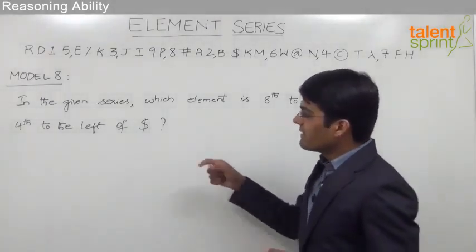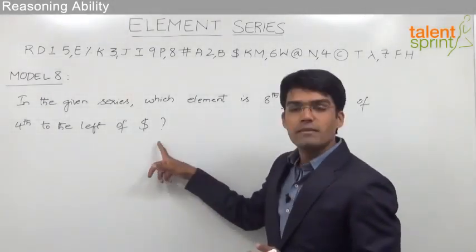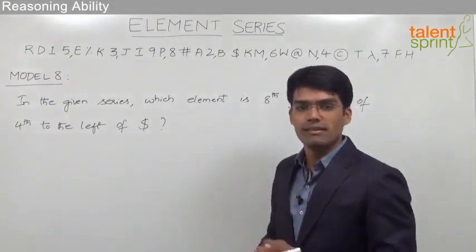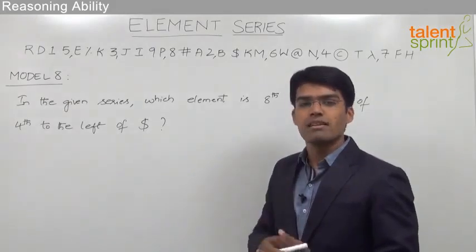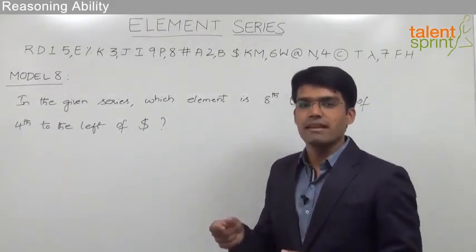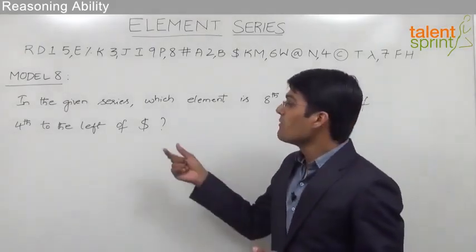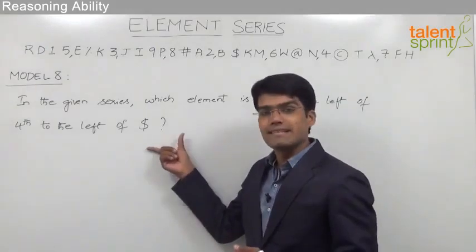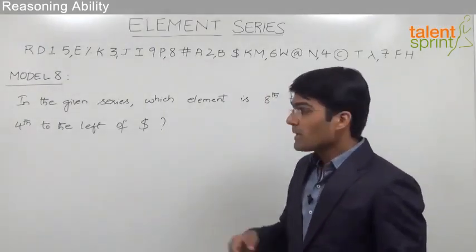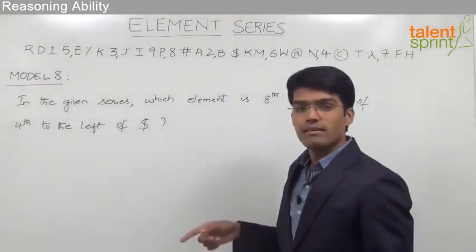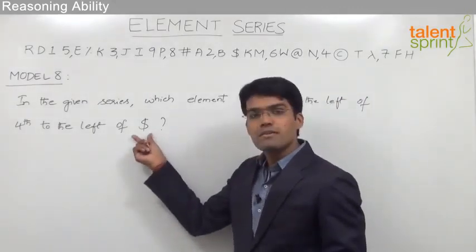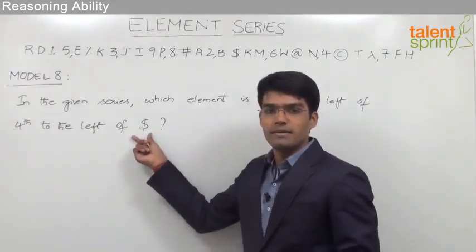The difference between this model and Model 4 is that in Model 4 we were trying to find out a particular element from one of the ends — either the right end or the left end. But in this model, we are trying to find out an element with respect to some other element.